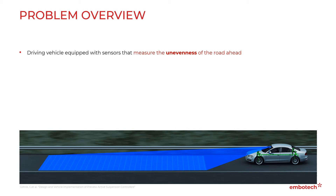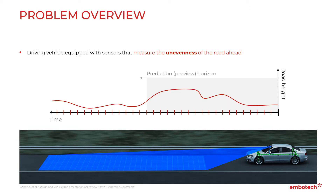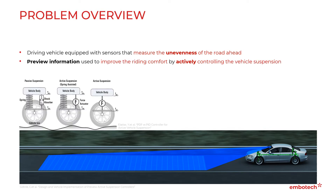For this problem we consider a driving vehicle equipped with sensors that measure the unevenness of the road ahead. These measurements will provide an active preview horizon comprised of road height across consecutive time steps. As such, the preview information can be used to improve the riding comfort by actively controlling the vehicle suspension.